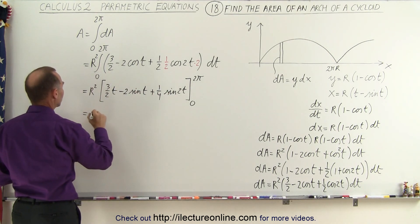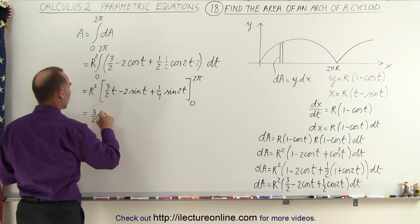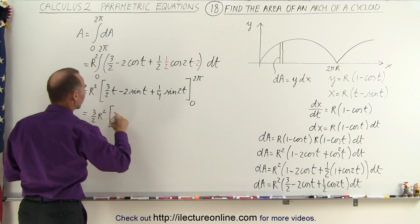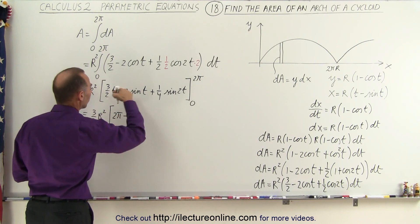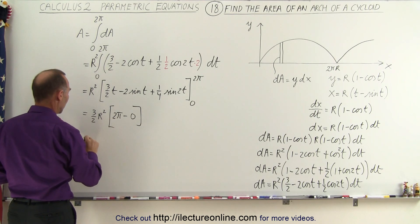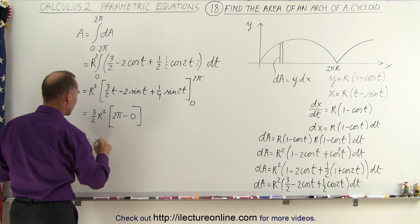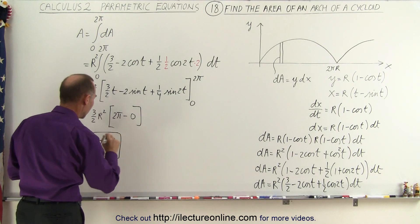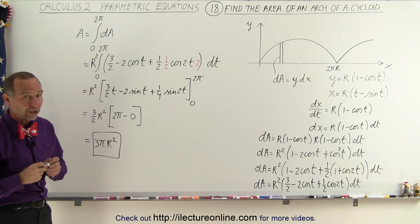So this becomes equal to 3 over 2 r squared times, plug in the upper limit, 2 pi into t gives us 2 pi minus plug in the lower limit, we get 0. So this 2 cancels out with this 2 and we get this is equal to 3 pi r squared. And this would be the area of a single arch of the cycloid.